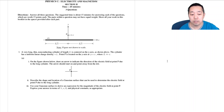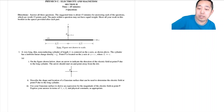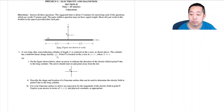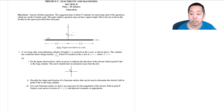Let's take a look at this question. A very long thin non-conducting cylinder of length L is centered on the y-axis shown above. The cylinder's uniform linear charge density is plus lambda. Point P is located on the y-axis at y equals C, where L is much much bigger than C.